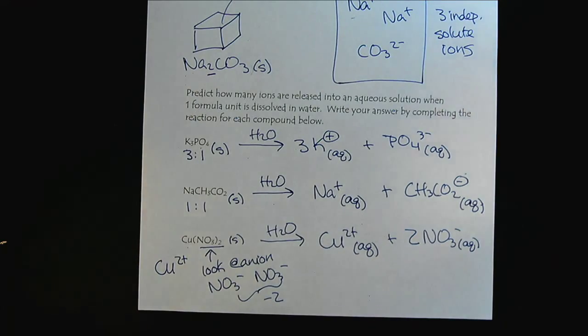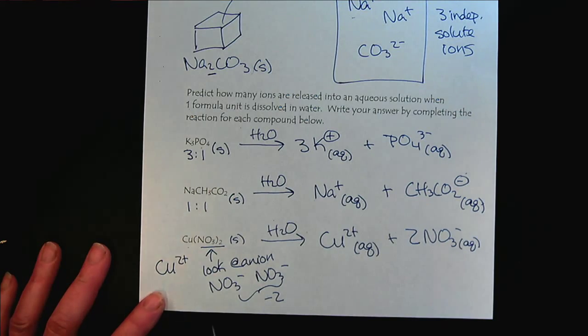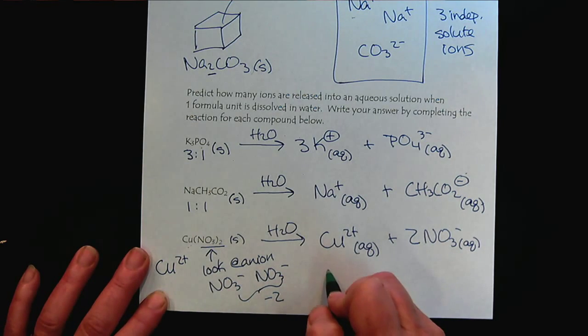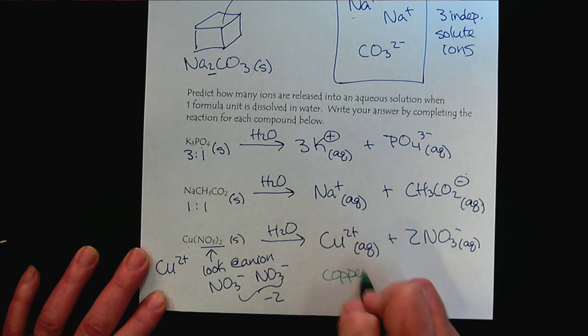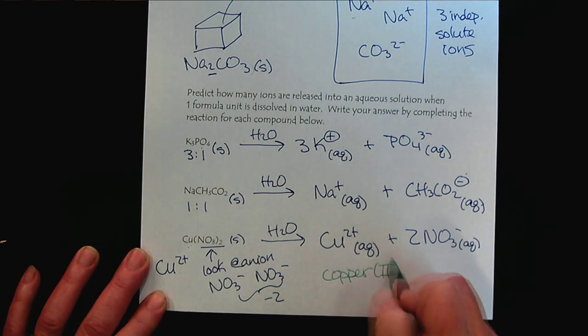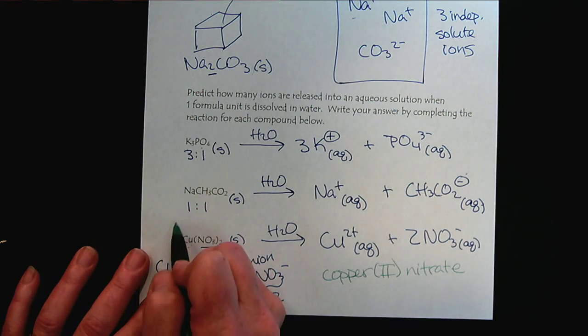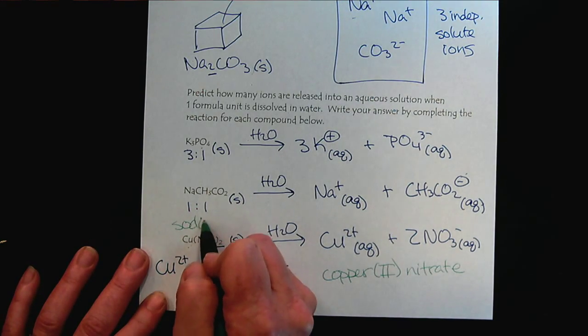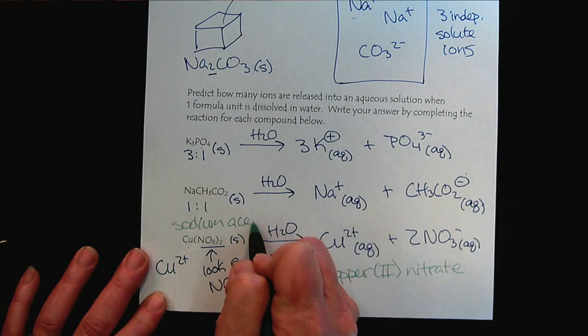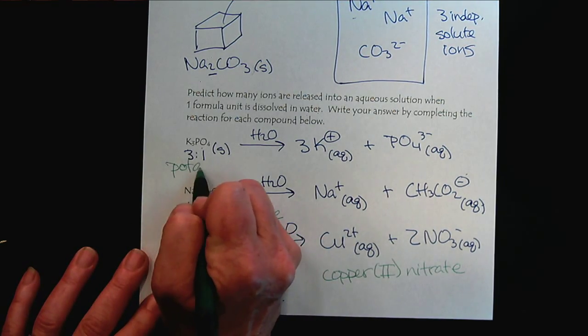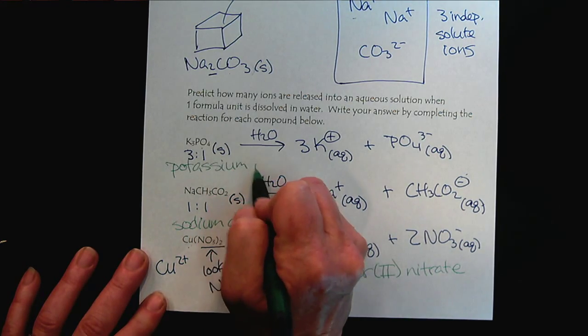So, I think just to finish up, let's make sure that we have all of the names for these ionic compounds. So, this first compound here with copper, that would be copper two nitrate. This would be sodium acetate and potassium phosphate.